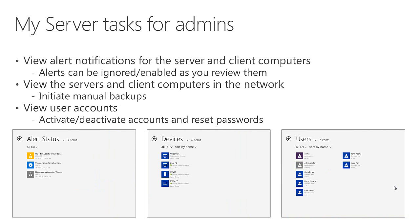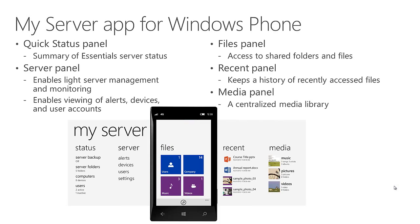Some of the things administrators can do: there's a page where you can view different alerts, ignore, disable, or re-enable alerts as you review them. You can view the different servers and client computers in the network. You can initiate a manual backup of a computer connected to the Essentials Server, view user accounts, and even activate or deactivate an account using this interface, as well as reset user passwords. We have a similar experience for the phone device — a little different in terms of what you can do and how it looks, but many features are quite similar.